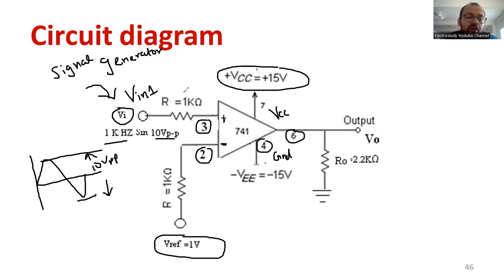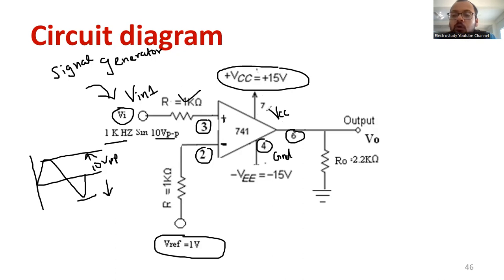The input resistance is 1 kilo ohm for each case, and the output resistance will be 2.2 kilo ohms. These are the experimental setup specifications. You can refer to the pinout of the µA741 — you will definitely find all these connection points clearly mentioned there.